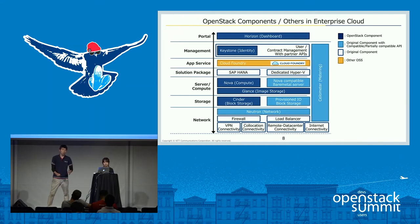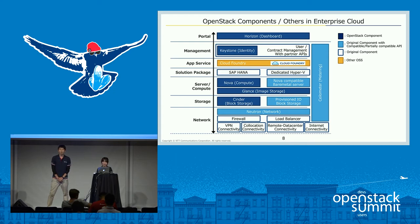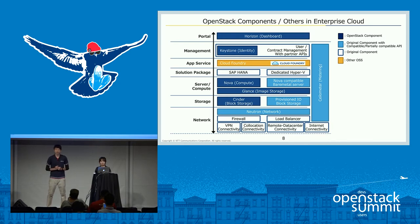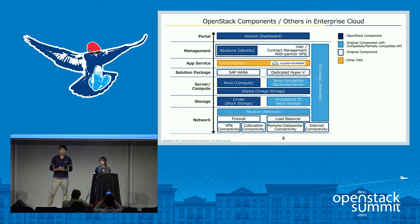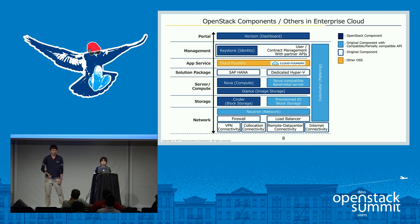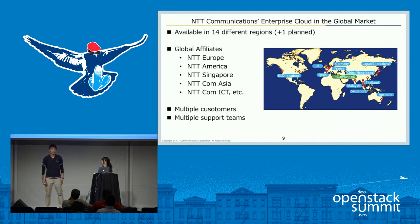This is the OpenStack component which we use. Dark blue ones are OpenStack components: Horizon, Keystone, Nova, Glance, and Cinder. Light blue ones are original components developed by ourselves that are compatible or partially compatible with OpenStack APIs. In the global market, our enterprise cloud service is available in 14 different regions, which is why we have multiple customers and multiple support teams.